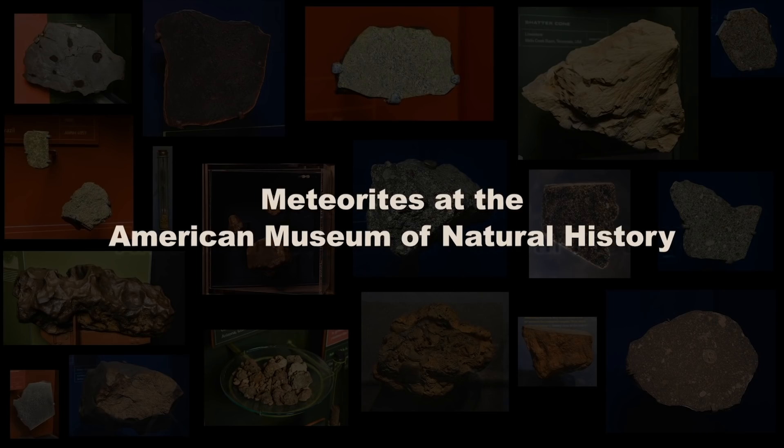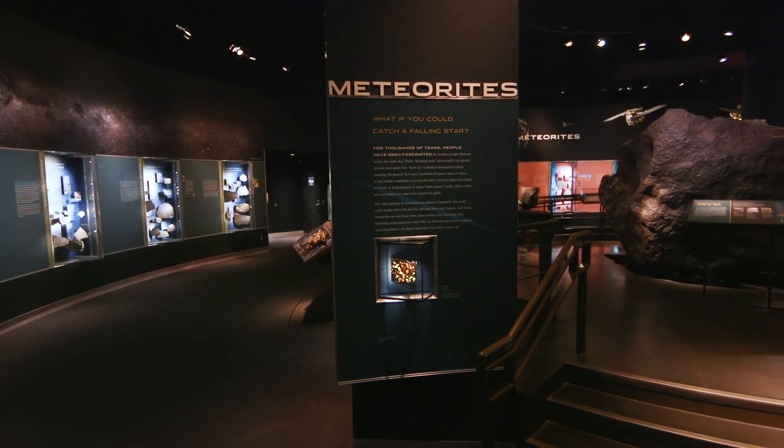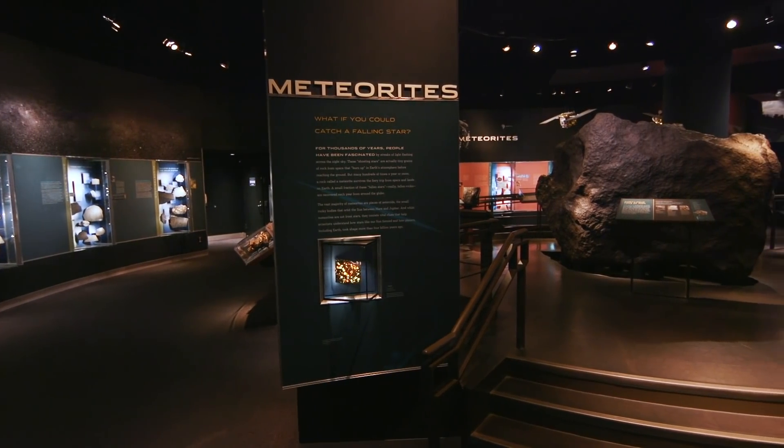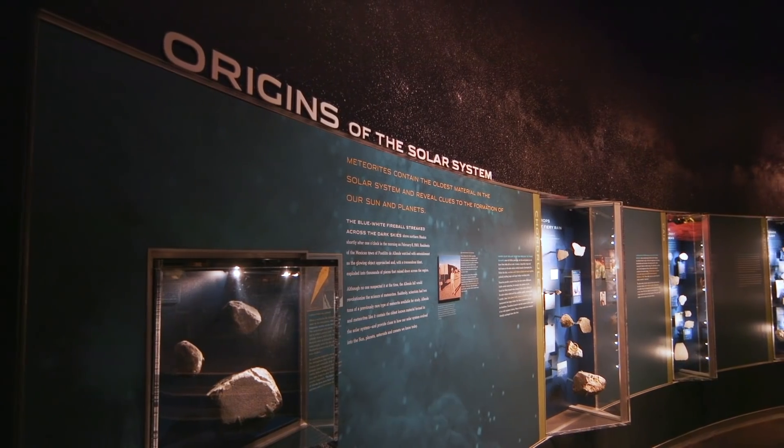What do meteorites tell us? They tell us about the formation of the solar system. They tell us about planets — our only samples of other planets are meteorites. And they tell us about the dynamic history of the solar system through the craters left by impacting meteorites. Through the samples in the hall, we tell stories about these topics.